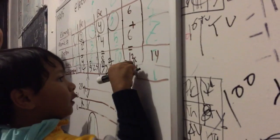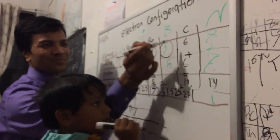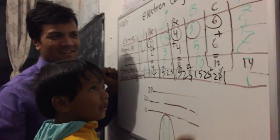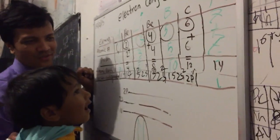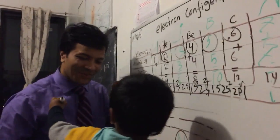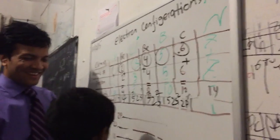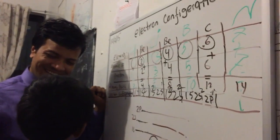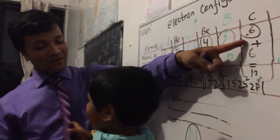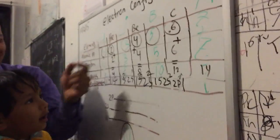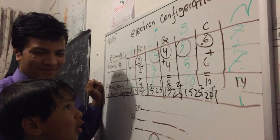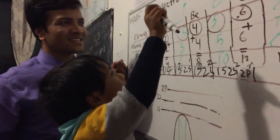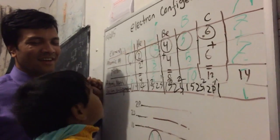All right, let's draw the last one — carbon. How many in carbon? Six. Okay so draw for carbon — no, we're gonna do nitrogen later, let's do carbon first. So how many? One, two, three, four, five, six — yeah, six. All right, so can you draw six arrows? Let's go do it. Electron configuration.